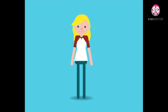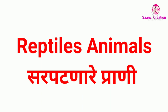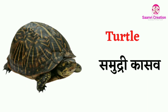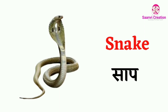Hi friends, welcome to Sanmi Creation. Today we learn about reptile animal names and amphibian animal names in English and Marathi. Let's start. Snail — snail means 'Gogalya'. Turtle (T-U-R-T-L-E) — turtle means 'Samudri Kasu'. Snake (S-N-A-K-E) — snake means 'Sap'.